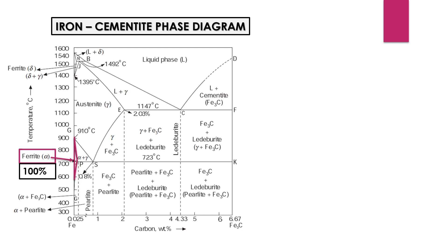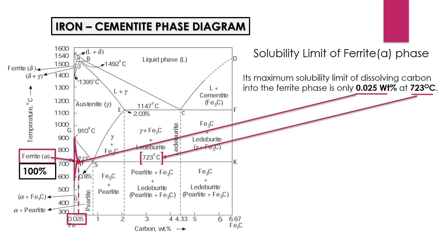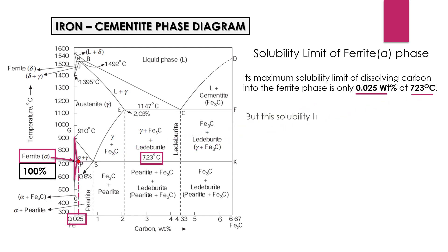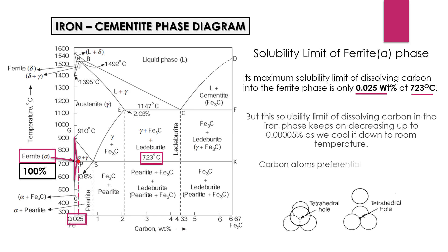The ferrite phase is thermodynamically stable, and its maximum solubility limit of dissolving carbon into the ferrite phase is only 0.025 percent at 723 degrees centigrade. This solubility limit keeps on decreasing down to 0.00005 percent as we cool it down to room temperature. Carbon atoms preferentially sit in the tetrahedral interstitial site of the BCC unit cell in this ferrite phase.